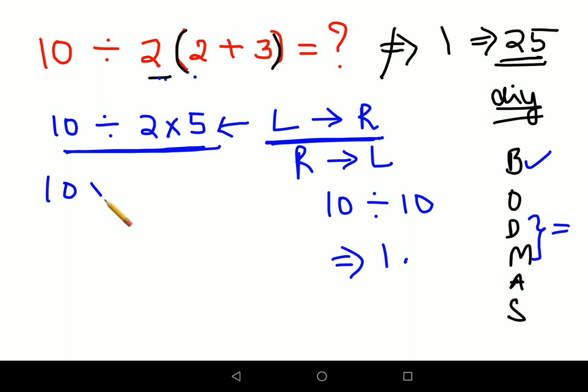So we will do 10. Division can be converted to multiplication sign using the rule of KCF. What does KCF mean? We keep the first number as it is. You change. C stands for change. Changing division to multiplication.